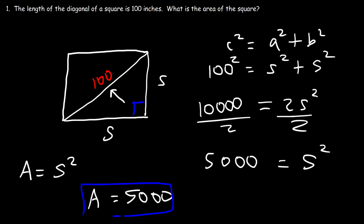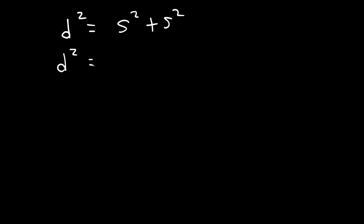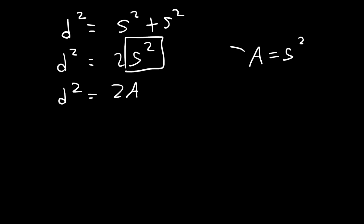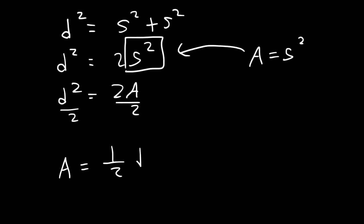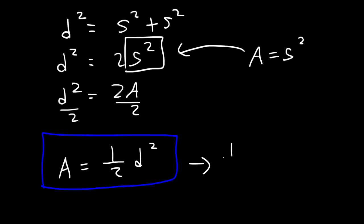Now let's derive a formula relating area directly to the diagonal. We saw that the diagonal squared equals s squared plus s squared, which is 2s squared. Since area equals s squared, we have d squared equals 2 times the area. Dividing both sides by 2, the area of a square equals one-half times the diagonal squared. In our example, that's 0.5 times 100 squared, which gives us 5,000.